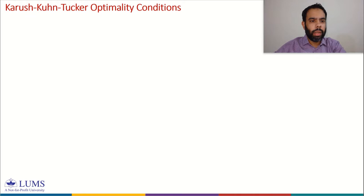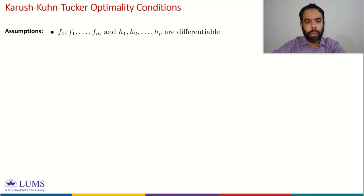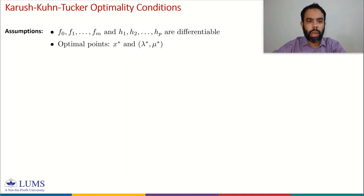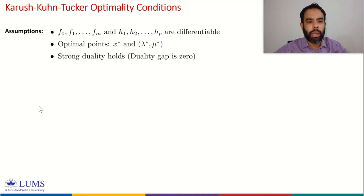We start with some assumptions. We assume that the objective function, inequality constraint functions, and equality constraint functions are all differentiable. We assume the optimal points are X star and lambda star, mu star, where X star is an optimal solution of the primal problem and lambda star, mu star are the optimal points of the Lagrange dual problem. We also assume that strong duality holds, meaning the duality gap is zero. With these assumptions, we define the KKT conditions that must be satisfied by X star, lambda star, and mu star.